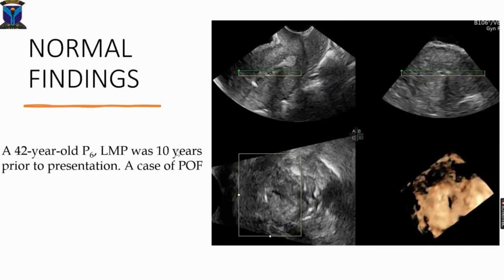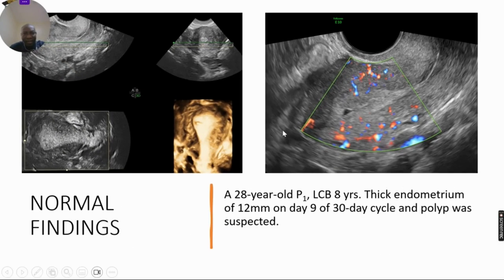This was a 42-year-old being evaluated for premature ovarian insufficiency — note the normal endometrial cavity, although there is a myometrial lesion. This was a 28-year-old with a last menstrual period of 8 years, found to have thick endometrium on 2D. Note the thick endometrium, and look at the endometrial lining — it is not straight. The endometrial lining is irregular under this slight fluid collection, and this is the rendered image.